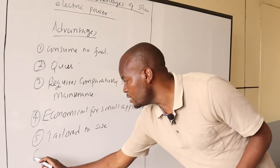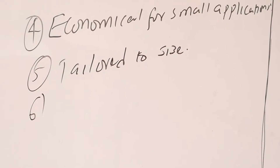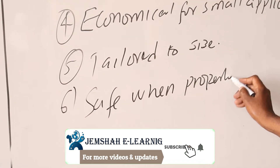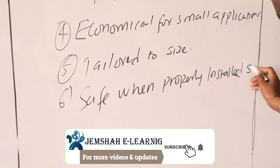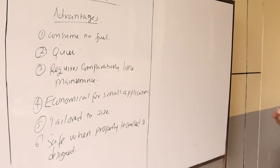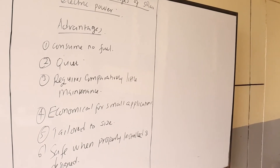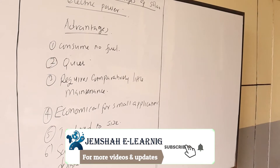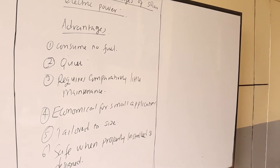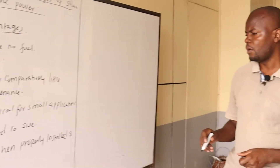The sixth advantage is that solar systems are safe when properly installed and designed. The risk of electric shock is always very low with 12 and 24 volt DC systems. There is also less fire risk than if a fuel such as kerosene or any combustible fuel, or even a generator solution, is used.